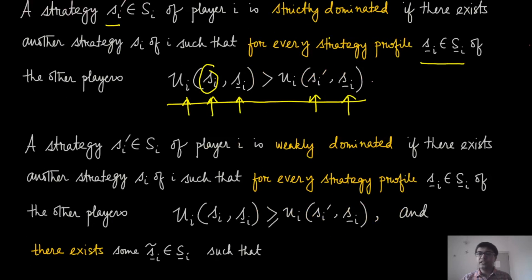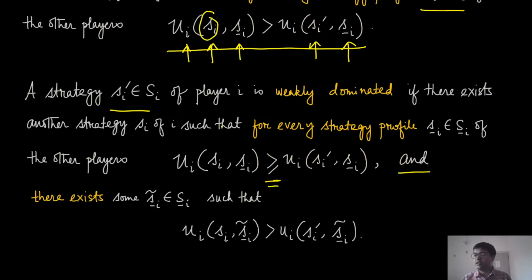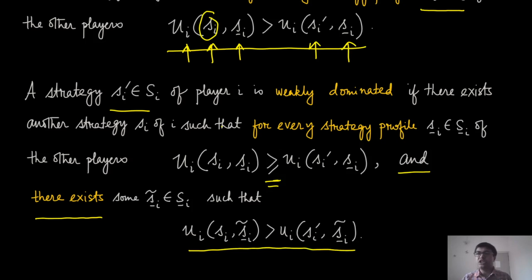This is the notion of a strictly dominated strategy. There is also an equivalent notion for weakly dominated strategy. We call S'_i weakly dominated by S_i if for every other strategy profile the inequality becomes weak — a weak inequality rather than strict. But there is an additional condition: there must exist some S̃_{-i} for the other players such that the inequality is strict. It does not need to hold for all S_{-i}, because if it did, you would already have strictly dominated strategies.